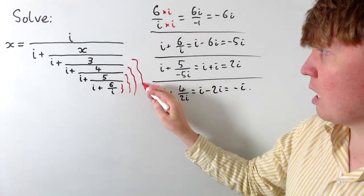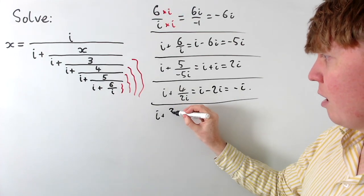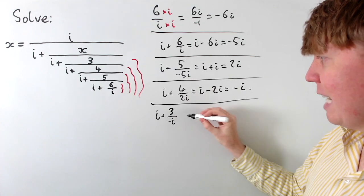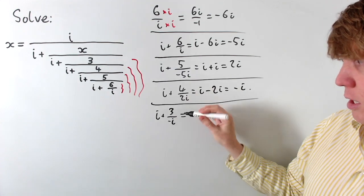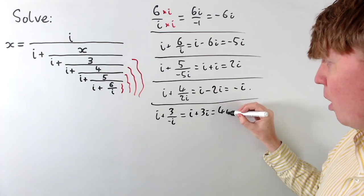And then if we want to do the same here, we've got i plus 3 over negative i, so let's just write this out, i plus 3 over negative i. So the 1 over i gives us a negative sign, so it becomes i plus 3i, or 4i.